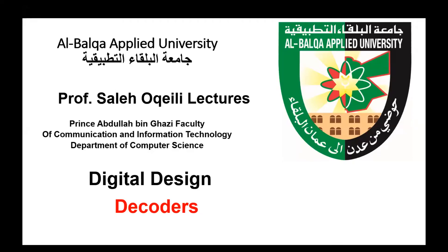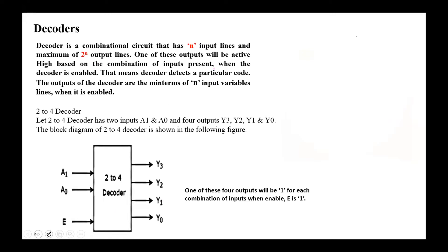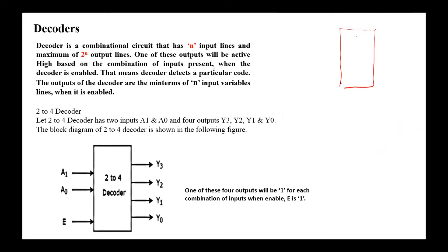Welcome again. Today our topic in the digital design course is decoders. A decoder is a combinational logic circuit that has N inputs and maximum 2 to the power N outputs. The general logic diagram of a decoder has N inputs and at most 2 to the power N outputs. We say that we have an N to 2^N decoder — for example, 1-to-2, 2-to-4, 3-to-8, 4-to-16, etc. Usually only one of these outputs is high active and all other outputs are zeros.